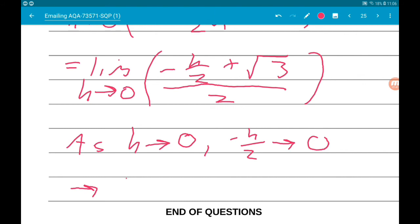So f dash of pi over six is going to leave us with root three over two, as we would have expected if we used normal differentiation.